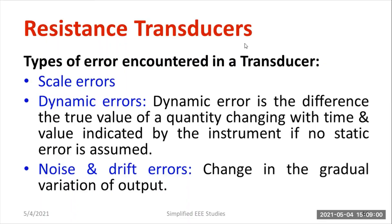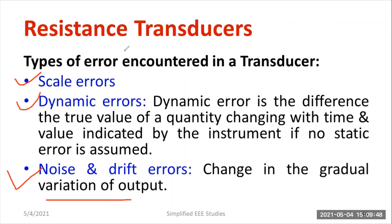The major errors encountered in this kind of transducer are: first, scale errors because the scale is non-uniform, which affects accuracy. Second, dynamic errors — the difference between the true value of a quantity changing with respect to time and the value indicated by the instrument when no static error is assumed. Third, noise and drift errors, occurring mainly due to gradual variation in the output. These errors are most common in resistance transducers, making them unsuitable where high accuracy is required.